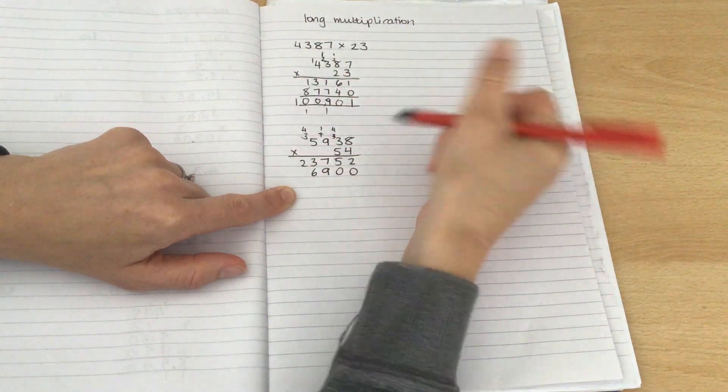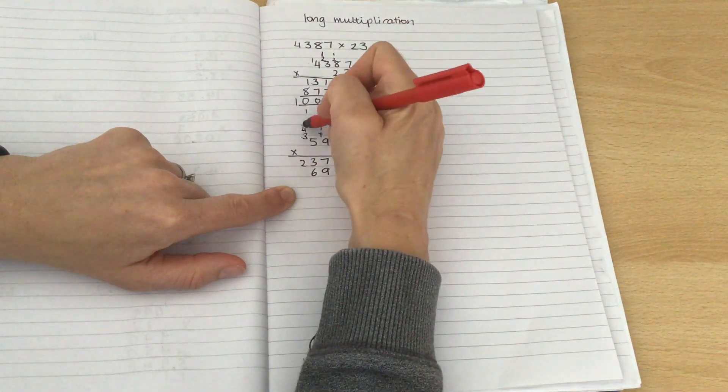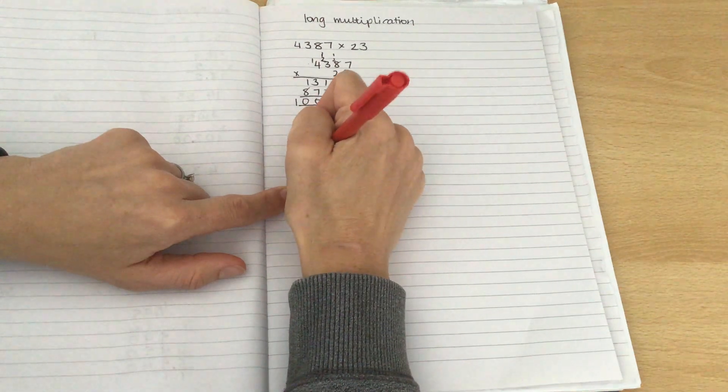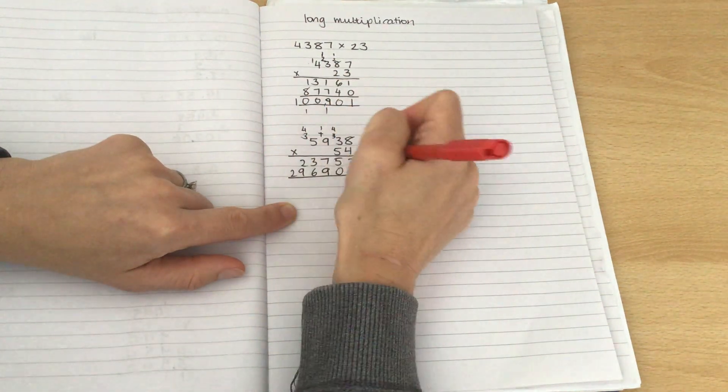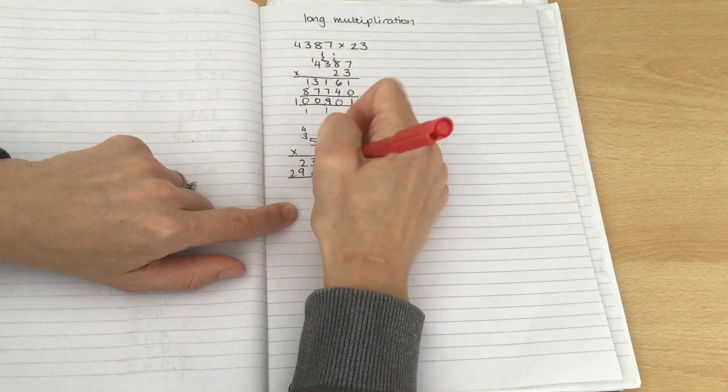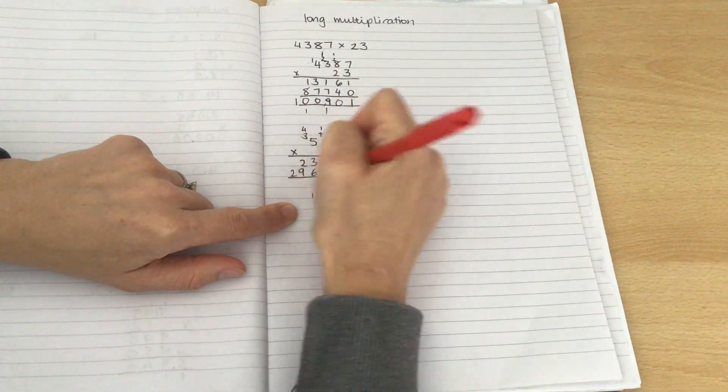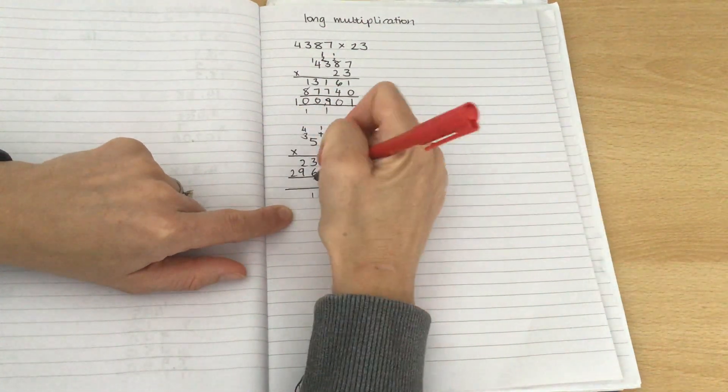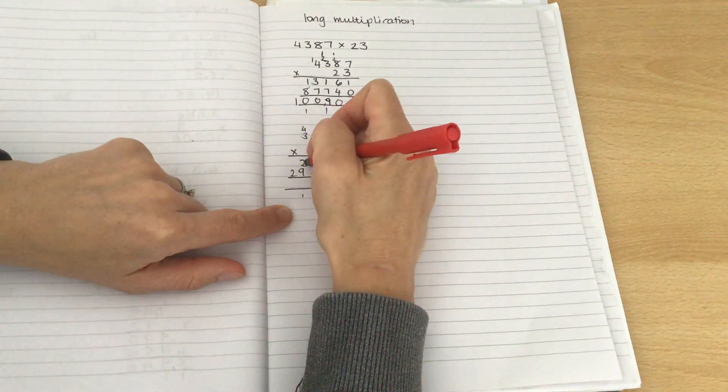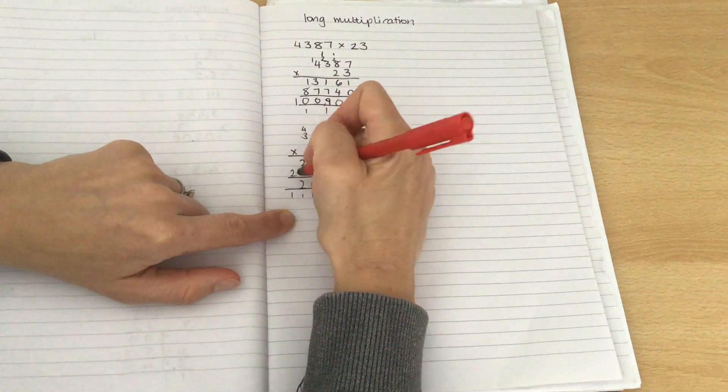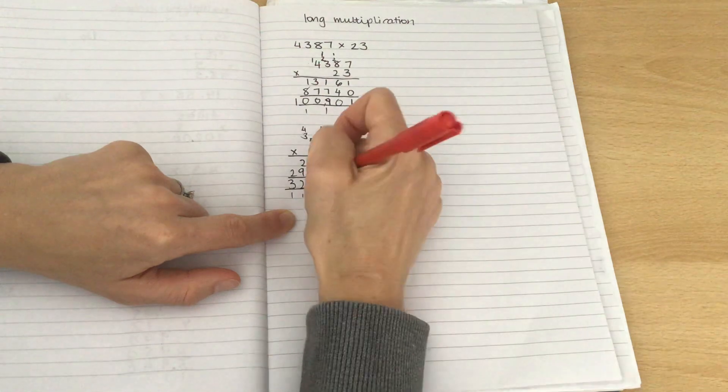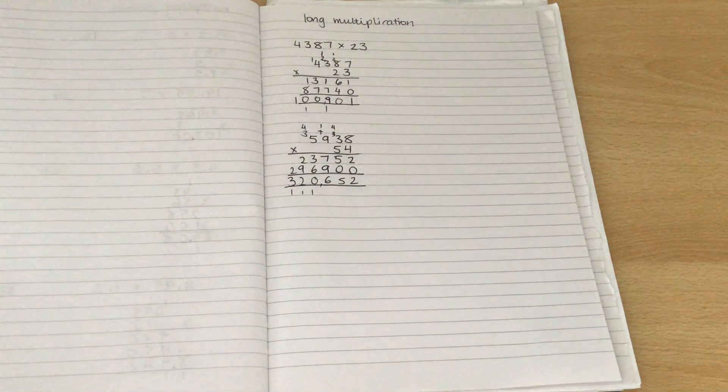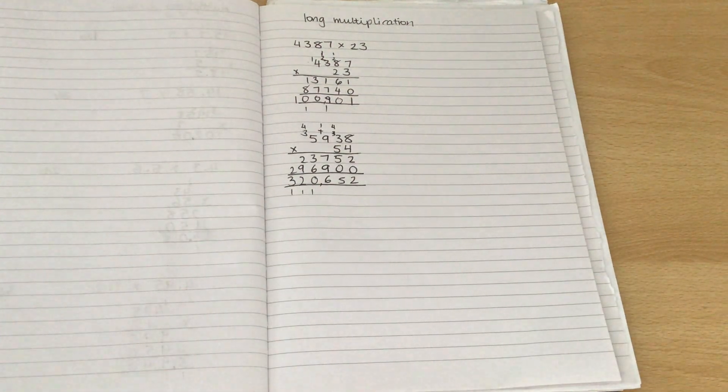And again, showing that extra carrying. 5 times 5 is 25. Add the 4 is 29. Okay, 2, 5, 7 and 9 is 16. 3 and 6 and 1 is 10. 2, 11, 12. And I end up with 320,652.